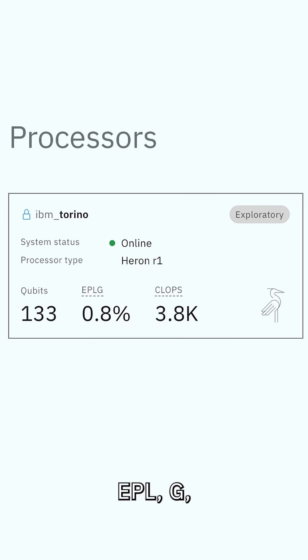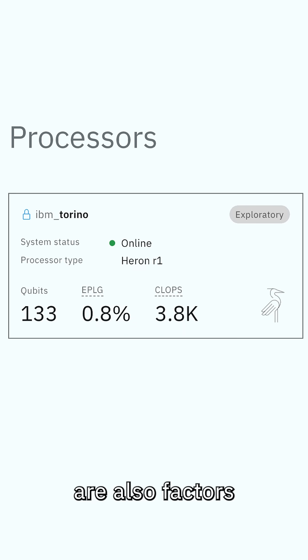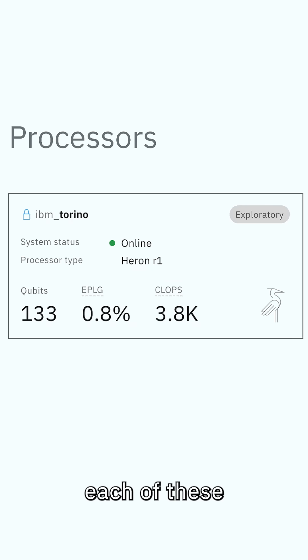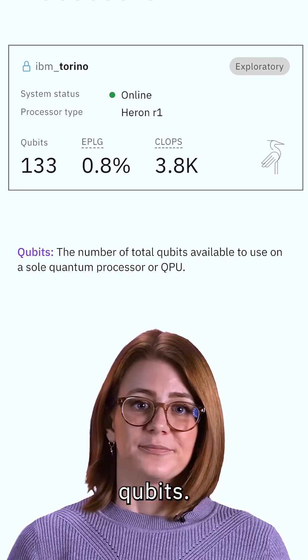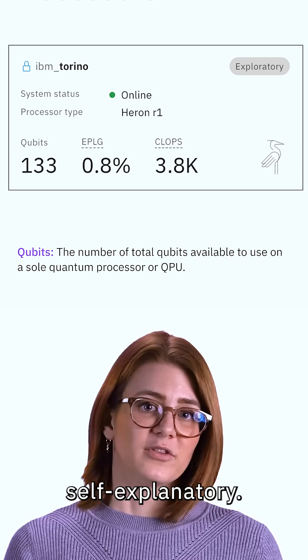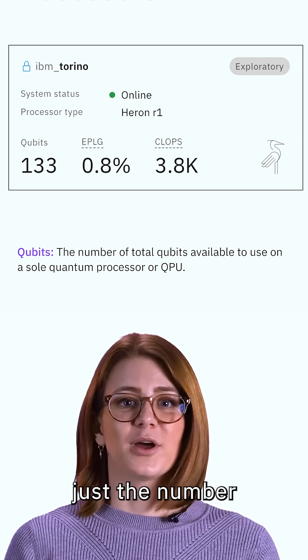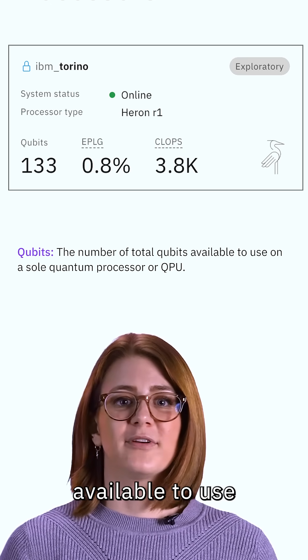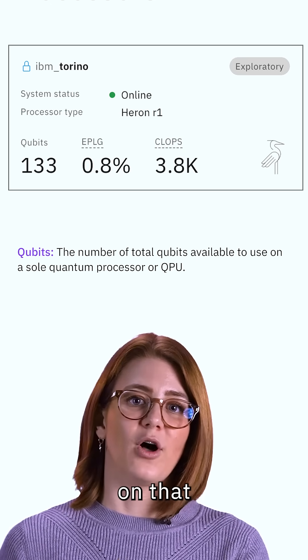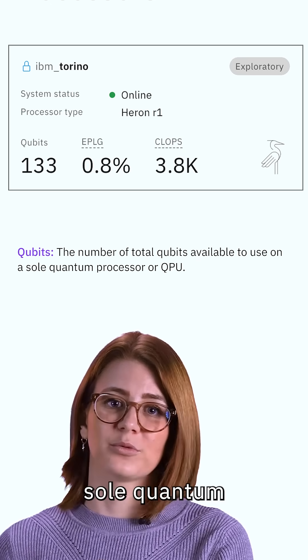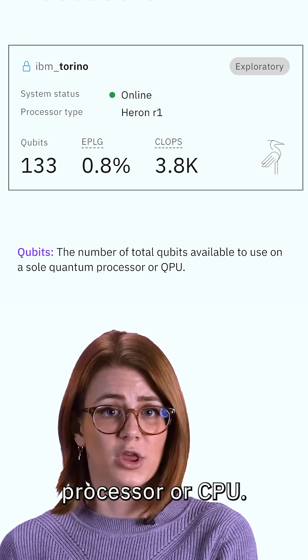Qubit count, EPLG, and CLOPs are also factors that are all listed. We'll go over each of these. Qubits is just the number of total qubits available to use on that sole quantum processor, or QPU.